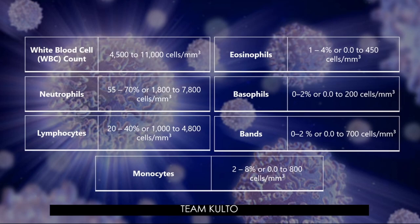Why do you need to know normal values? Because that's how you identify a deviation from normal. For example, an increased WBC count may indicate infection. A low hemoglobin or hematocrit level could be a sign of bleeding or anemia. This is very important for you to master and memorize by heart. These are your white blood cells and differential values.